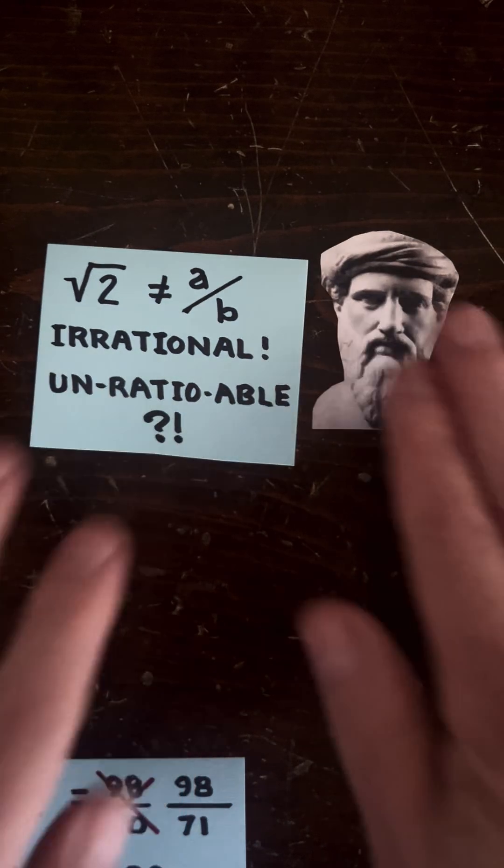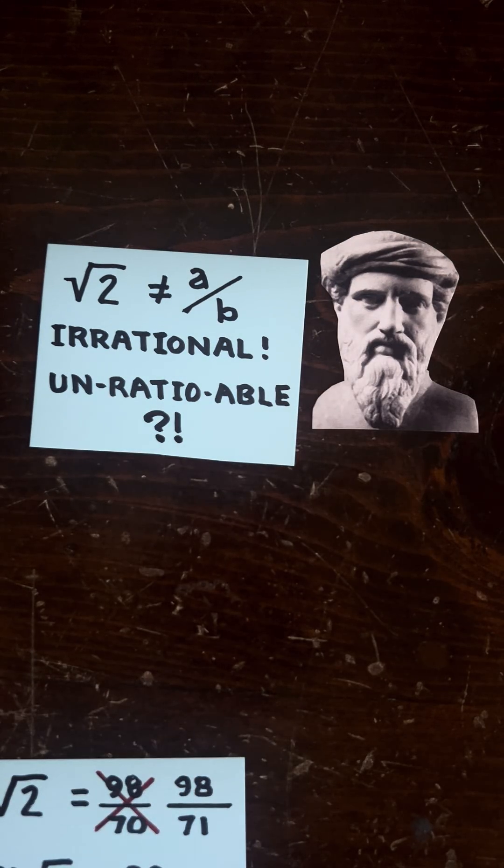And so through this kind of reasoning, the Greeks proved that the square root of two can't be the ratio of any two whole numbers, making it irrational or possibly meaning unratiable. But that's another story.